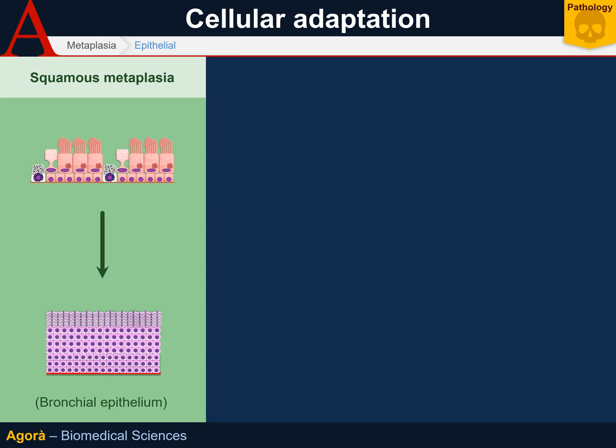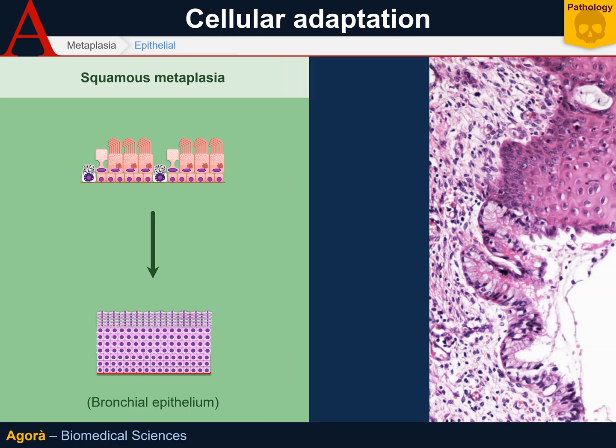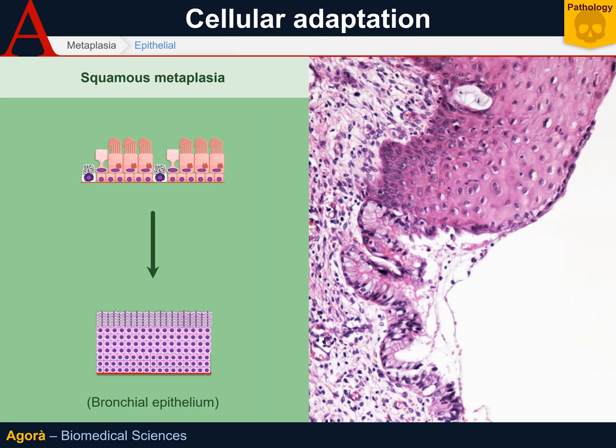This type of transformation obviously aims at adapting. Smokers' bronchi are exposed to the high temperatures of smoke, as well as to the great amount of radicals inside it. For this reason, the normal bronchial epithelium is replaced by a more resistant squamous one. However, the loss of ciliated epithelium prevents the lung from warding off waste, thus damaging it even more.